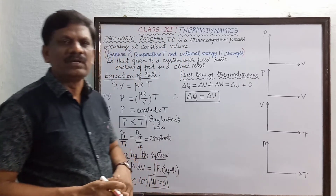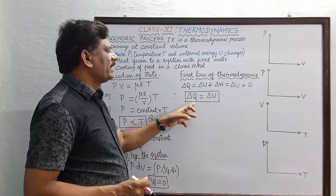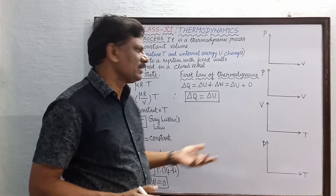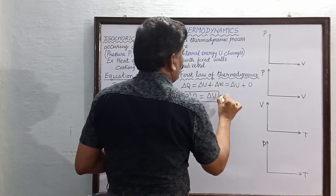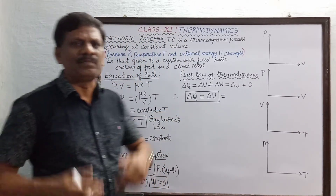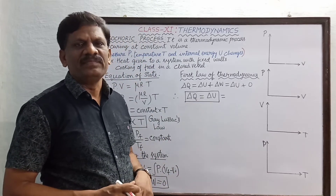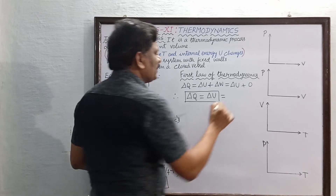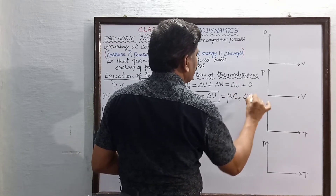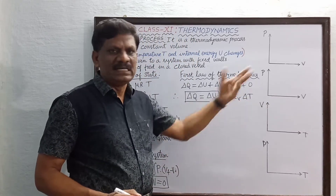The whole quantity of heat applied to the system is utilized only to increase the internal energy of the system. This can also be expressed as ΔQ = μ × Cv × ΔT, where μ is the number of moles and Cv is the molar specific heat at constant volume. This expression is used for solving MCQs.